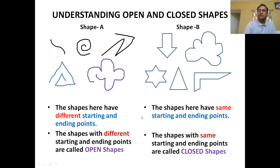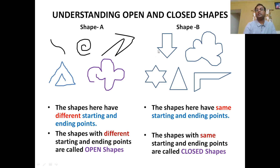Shapes which have the same starting point and ending point are called closed shapes. When I say open shape, there is a door for you to enter — you can enter because there is an opening. In closed shapes, all sides block the entry of any point inside, so they are called closed shapes.